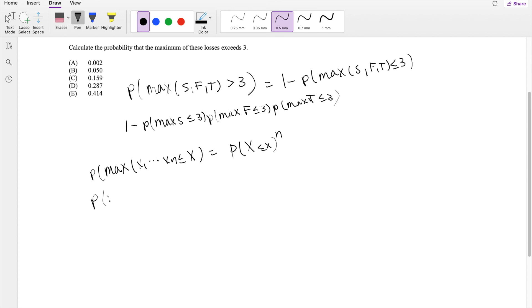And likewise, we also know, this is irrelevant to this question, but the probability that min of x1 to xn is less than x - the CDF of minimum is the same idea, right? But we have to think of it like 1 minus the probability that minimum x1 to xn is greater than x.